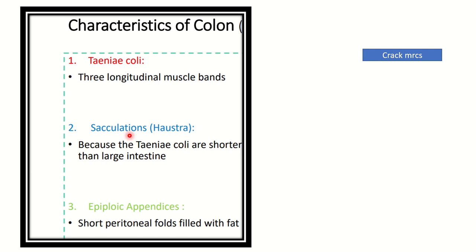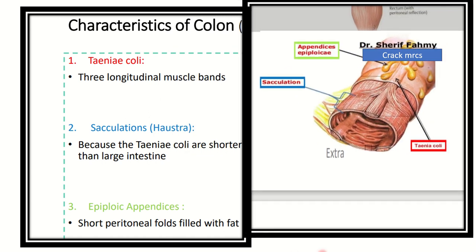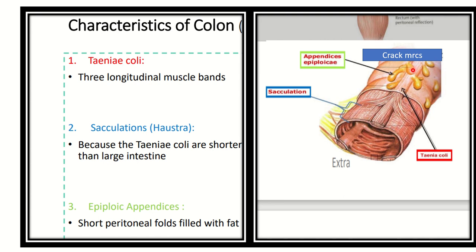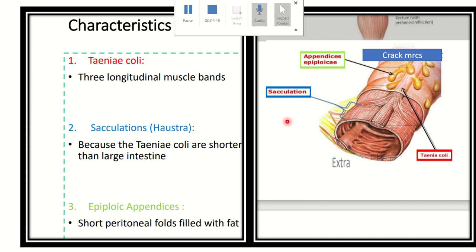This pocket-like shape is called the haustra. Then there are the appendices epiploicae — these are peritoneal fat-filled folds, meaning fat bags suspended on the colon. In the picture, the longitudinal muscle is the taenia coli, and we can see the haustra dividing the large intestine into portions. Here we can also see the appendices epiploicae, which are bags of fat.